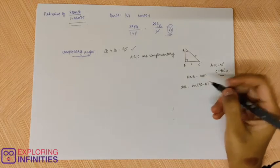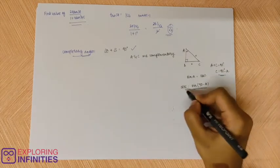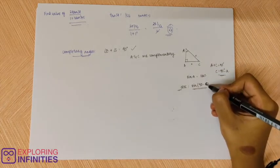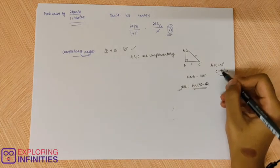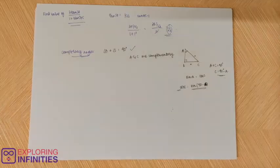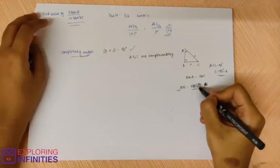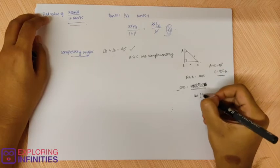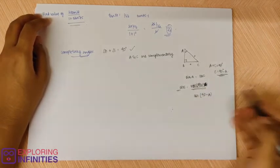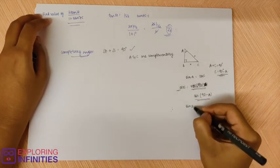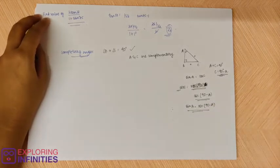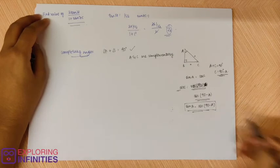That is how you can write an angle. Cos C can be written as cos of 90 minus A, because C is 90 minus A. So now what can you see? Sin A is cos of 90 minus A. So these are complementary angles.